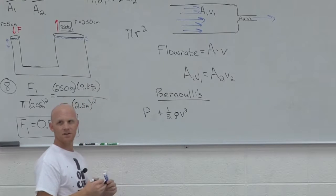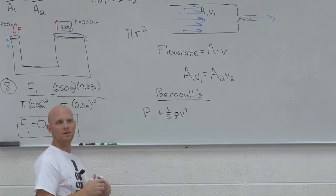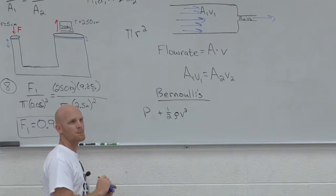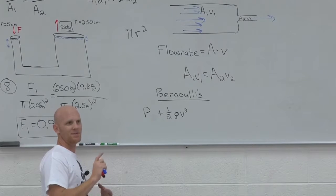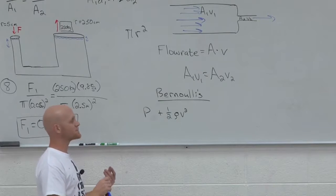So what's kinetic energy of a normal object? What's the formula for it? 1 half mv squared. 1 half mv squared. So you guys learned that earlier this semester.